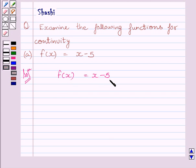Now this is a polynomial function and polynomial function is continuous at every real number. So this implies function f is continuous at every real number.